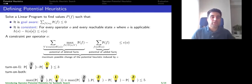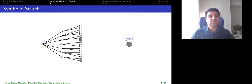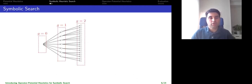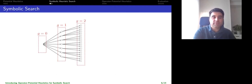Now let's move to symbolic search. In symbolic search we explore the search space not state by state, but in sets of states at the same time. We group states by their distance to the initial state — the set of states reachable with cost 1, cost 2, and so on.